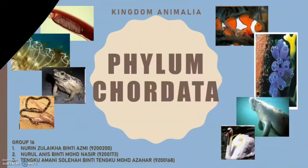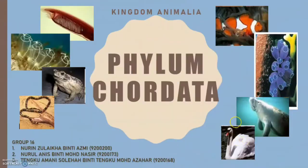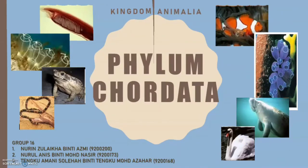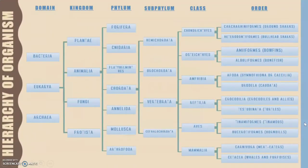Assalamualaikum. I'm a representative from group 16 and we are going to talk about one of the phyla in Kingdom Animalia, which is Phylum Chordata. Here is the hierarchy of organisms. We want to focus on domain Eukarya, Kingdom Animalia, Phylum Chordata, and Subphylum Vertebrata.